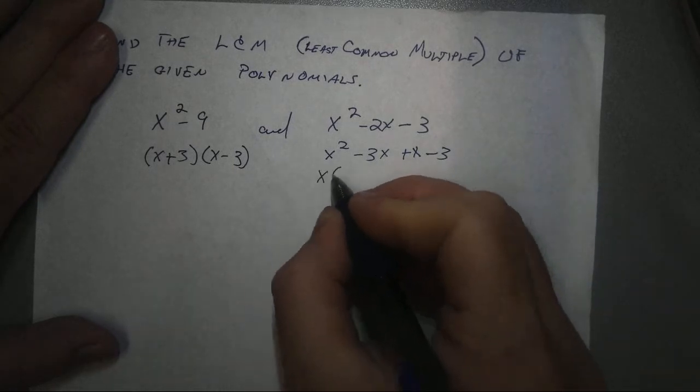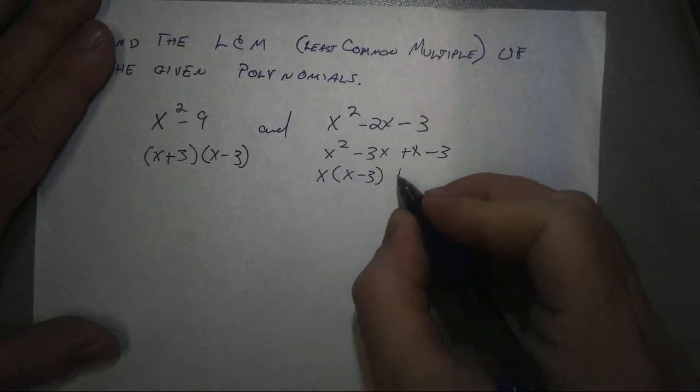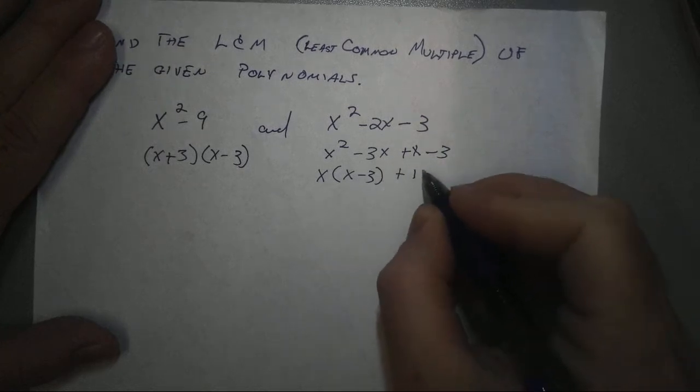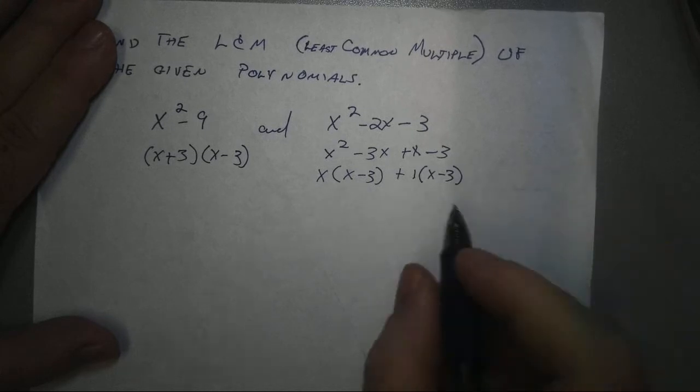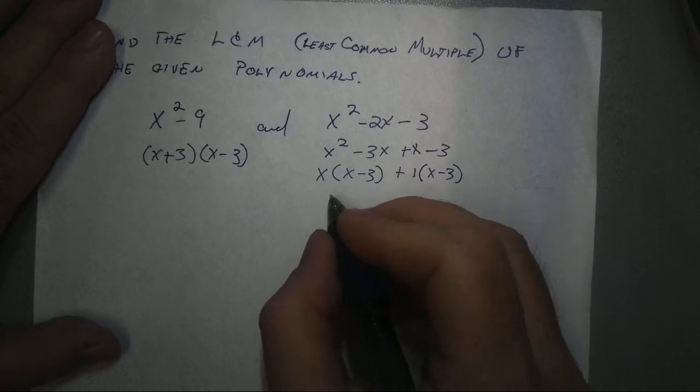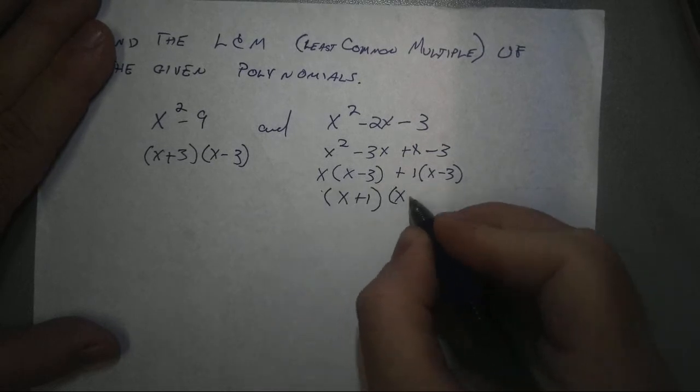I can factor out the x using x minus 3. I can factor out a 1, you don't really have to do that, but I like to see it, x minus 3. And at this point, I can factor out the x minus 3, and it leaves me with x plus 1, x minus 3.